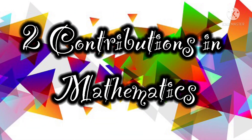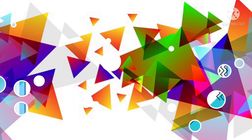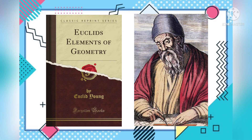Two of his contributions in mathematics. The Elements was a lucid and comprehensive compilation and explanation of all the known mathematics of his time. Euclid reworked the mathematical concepts of his predecessors into a consistent whole, later to become known as Euclidean Geometry, which is still being taught to this time.